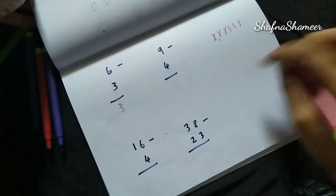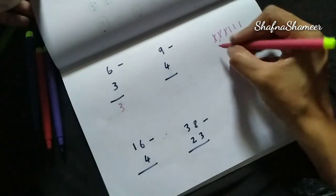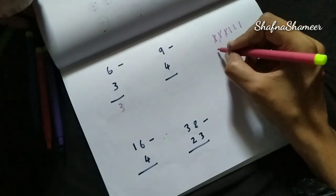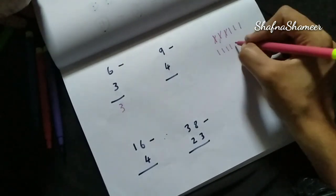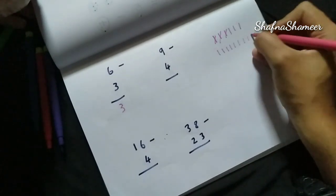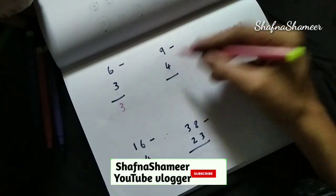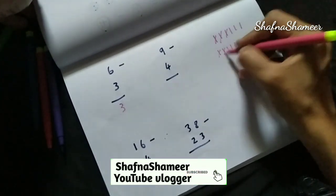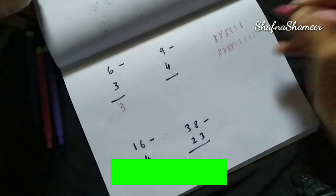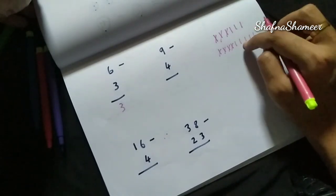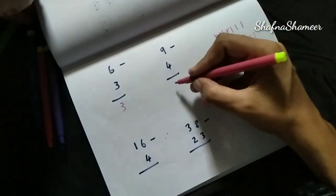Okay, 9 minus 4. 1, 2, 3, 4, 5, 6, 7, 8, 9 — take away 4: 1, 2, 3, 4. Balance is 5.